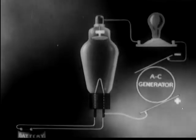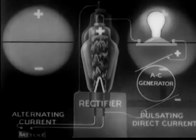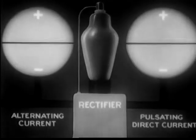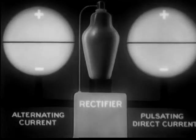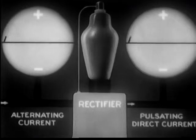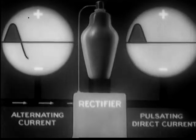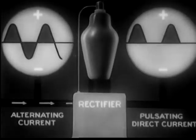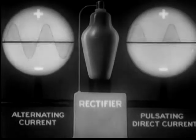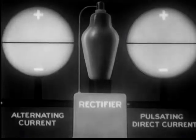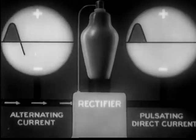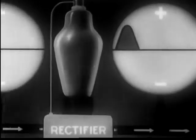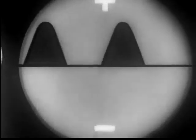We can visualize the result of the tube's rectifying action with the aid of these two oscilloscopes. The one on the left shows alternating current coming in. The one on the right shows pulsating direct current going out.